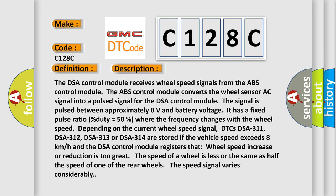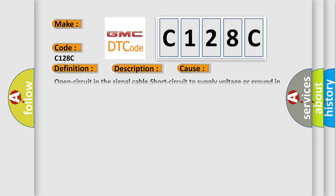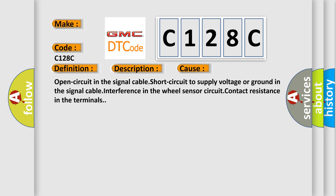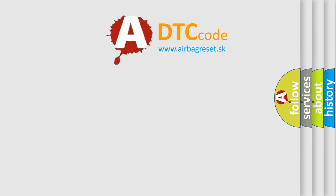This diagnostic error occurs most often in these cases: open circuit in the signal cable, short circuit to supply voltage or ground in the signal cable, interference in the wheel sensor circuit, contact resistance in the terminals. The airbag reset website aims to provide information in 52 languages.